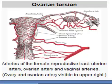Patients with ovarian torsion often present with sudden onset of sharp and usually unilateral lower abdominal pain, in 70% of cases accompanied by nausea and vomiting.